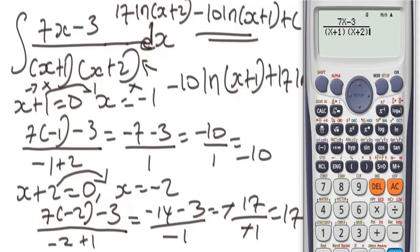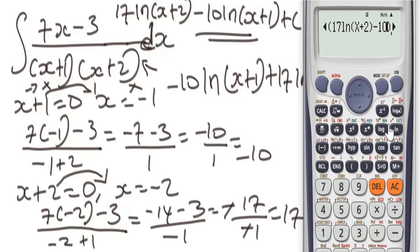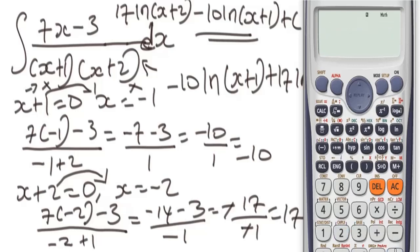That gives us 11/12, or approximately 0.91. Now differentiate our answer to verify it should also equal 0.91. Enter: 17 ln(x + 2) minus 10 ln(x + 1) and close the brackets — make sure the brackets are balanced. We had two opening brackets so we need two closing brackets. With x = 2 stored, press equals, and we get the same result, confirming our answer is correct.